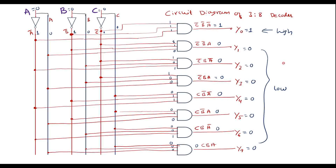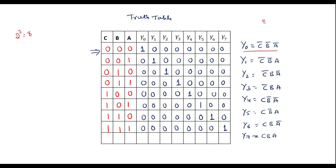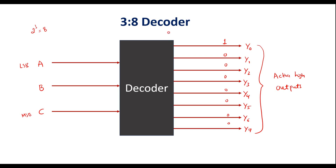This is a circuit diagram of the 3-to-8 decoder. In this decoder, I have not considered an enable line. There may be a circuit which also has an enable line — an extra line we can call the enable line. This enable line may be active high or active low. If it is active high, E must equal 1 for the decoder to be active. If active low, E must be 0 for the decoder to be active.